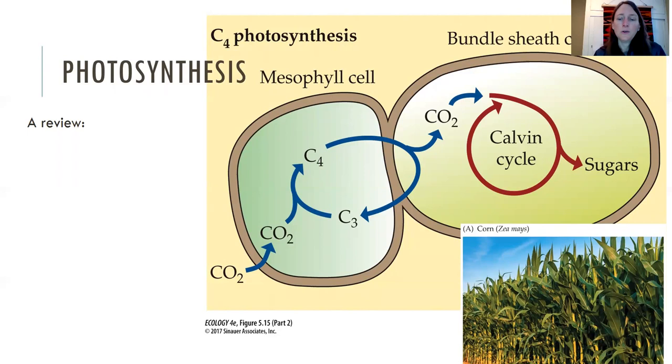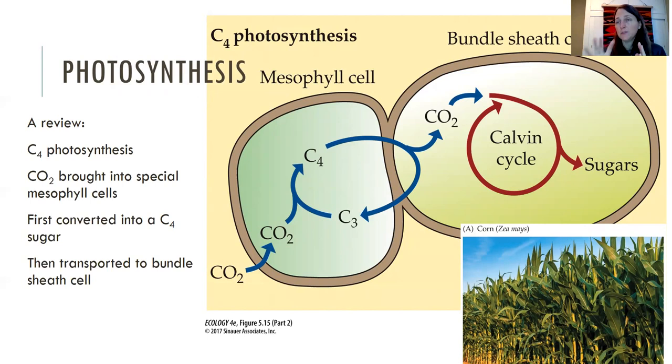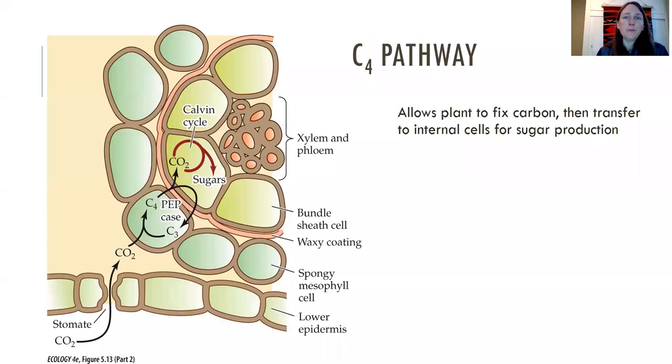That is different though than C4 photosynthesis. So C4 plants take up CO2 into a special mesophyll cell, and in that cell there is no rubisco. They convert the carbon dioxide into a C4 sugar, and then they take the C4 sugar into the bundle sheath cell, and then from there they convert the C4 sugar back into CO2 and they run the Calvin cycle to create their C3 sugar.